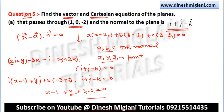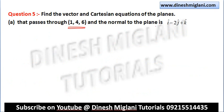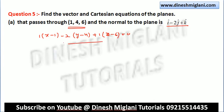Using the Cartesian form directly with direction ratios a, b, c and point (x1, y1, z1): a(x−x1) + b(y−y1) + c(z−z1) = 0. For the next sub-part with direction ratios 1, −2, 1 through point (1, 4, 6): 1(x−1) − 2(y−4) + 1(z−6) = 0, giving the Cartesian equation of the plane.